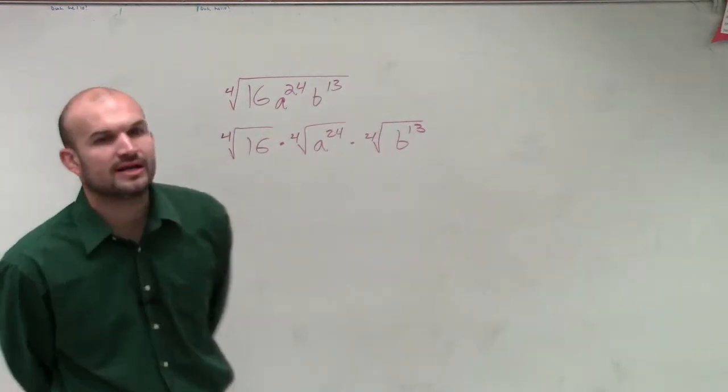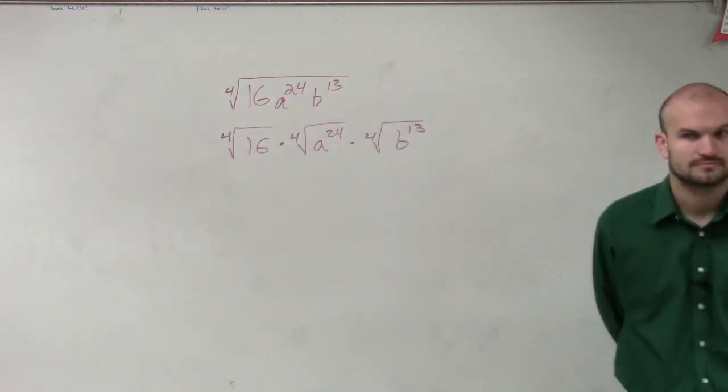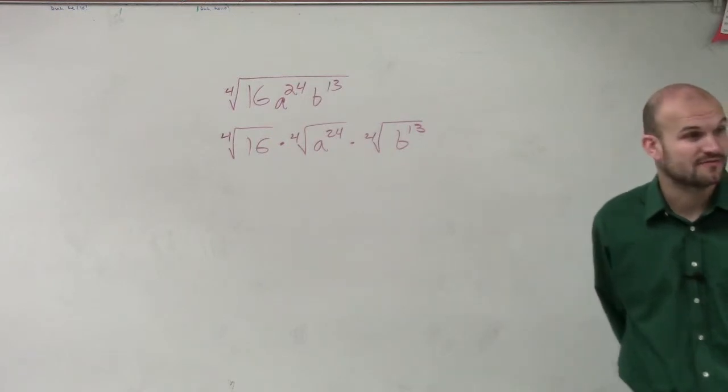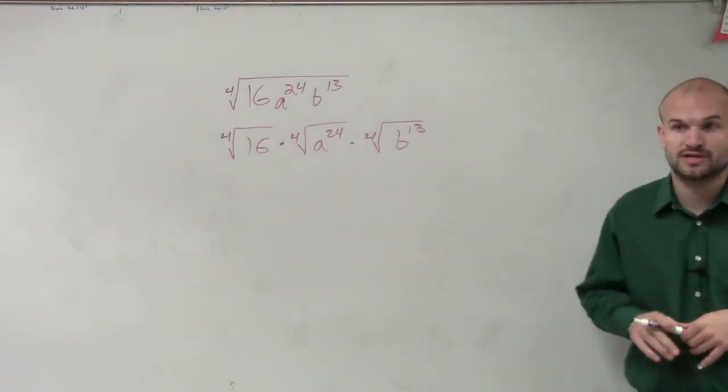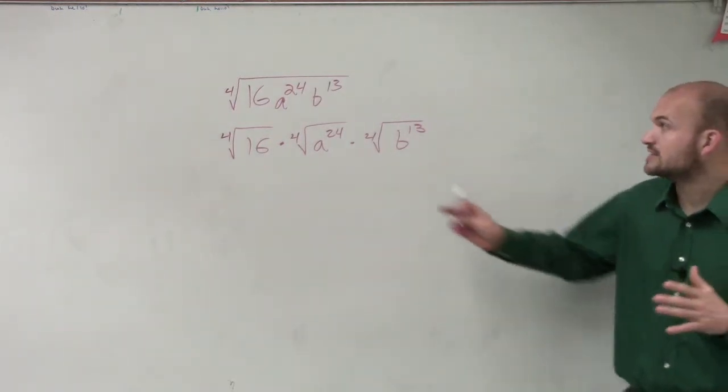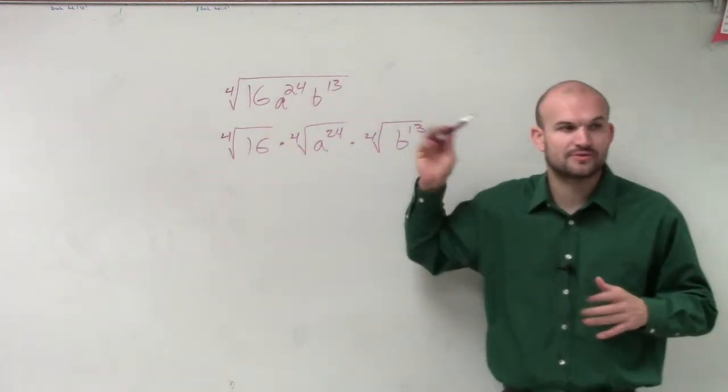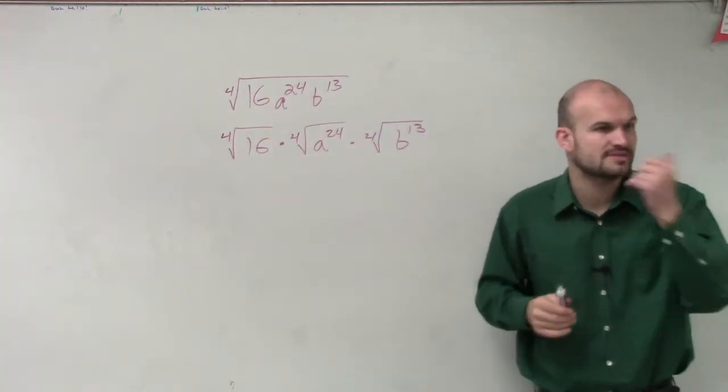Does everybody understand at least the first step that I did there? Does anybody have any questions on that first? So that's just applying that first rule that I showed you guys. All I did was I took each term that I'm multiplying through and I just broke it up as the fourth root of each one of those terms.